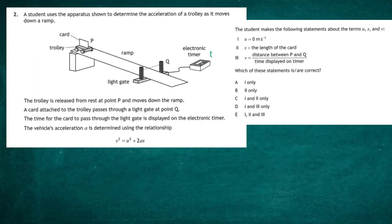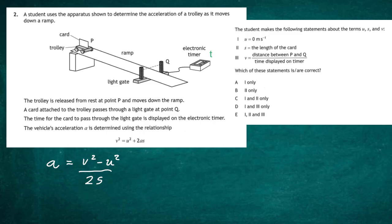Question 2 from Paper 1 of the 2022 Higher Physics examination from the SQA. A student uses the apparatus shown to determine the acceleration of a trolley moving down a ramp. The trolley is released from rest at point P; a card attached to it passes through a light gate at point Q, and the time is displayed on an electronic timer. The acceleration a is determined using v² = u² + 2as, which can be rearranged to give a = (v² − u²) / (2s).